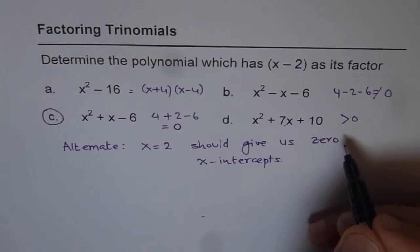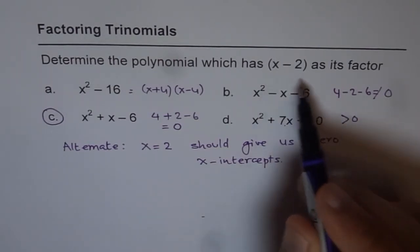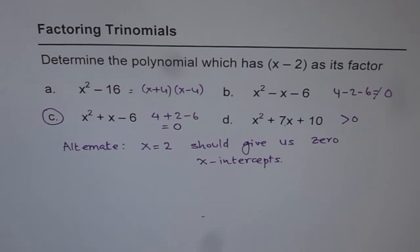And it also helps you to understand or rather remind you that if x minus 2 is a factor of your polynomial, then at x equals to 2, the value of the polynomial should be 0. And that is the property which we are going to use in solving such questions. I hope you appreciate it.